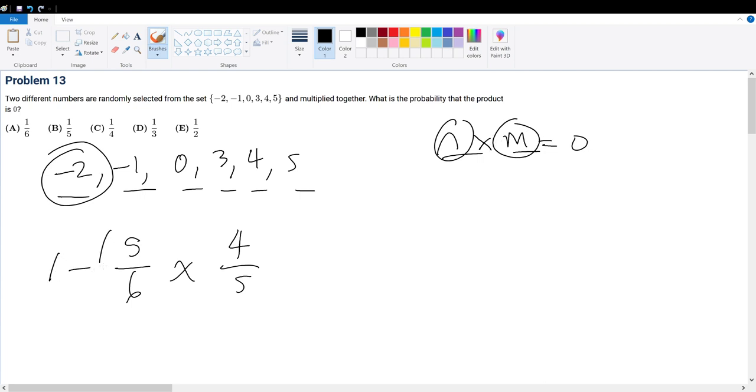So 1 minus this probability will give us our answer. So this is equal to 1 minus 2 over 3. Therefore, this is 1 over 3. Therefore, your final answer will be answer choice D.